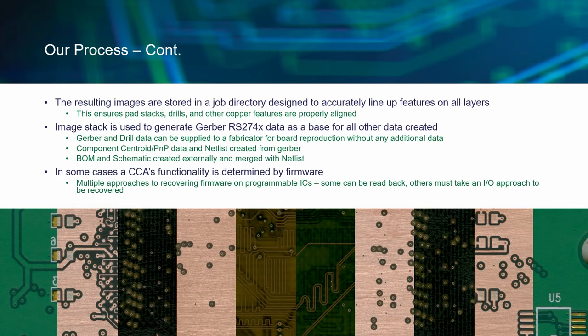For our destructive method and for x-ray based non-destructive RE processes, all the circuit layers are aligned in the software to match feature locations on each layer, allowing us to perfectly recreate the traces and connections on the circuit layers in vector data. Specifically for our x-ray or CT scanning processes, we start with a dimensionally accurate scan of the top or bottom of the PCB, and then align all of the image slices for the inner layers to that calibrated image.